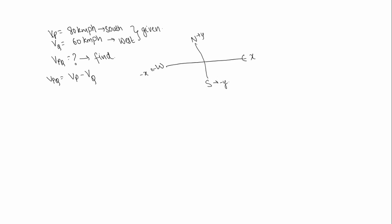The velocity of P is in the south direction, that is in the negative y-axis. The velocity of Q is in the west direction, that is the negative x-axis.